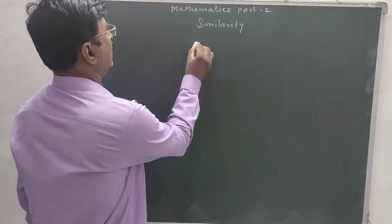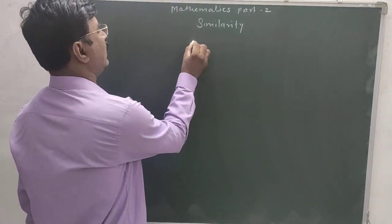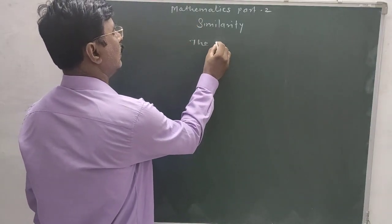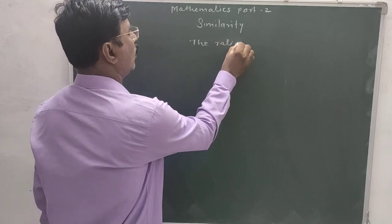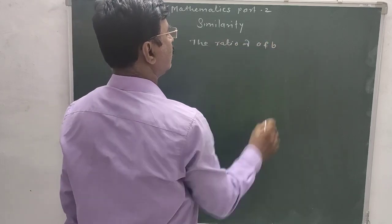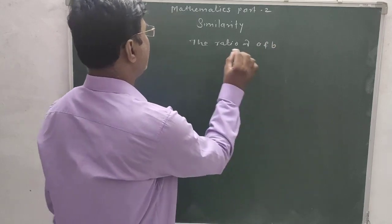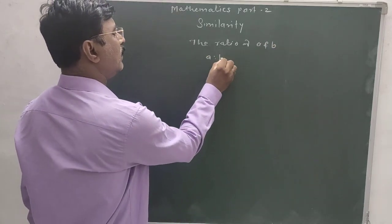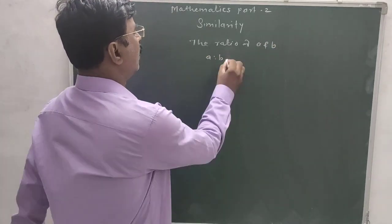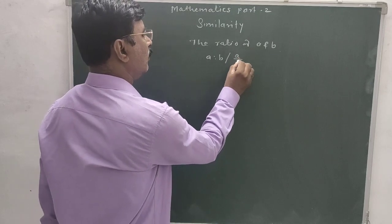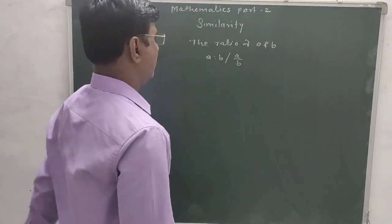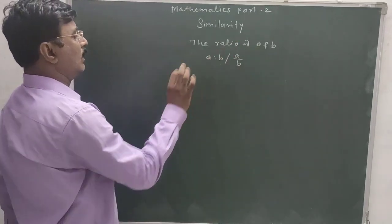In ratio and proportion, the ratio of a and b is written as a is to b, or a upon b.